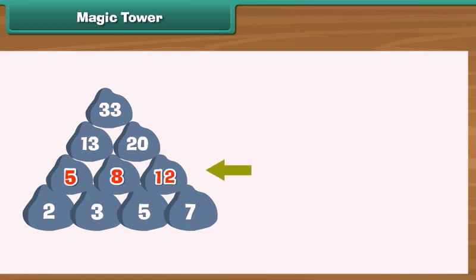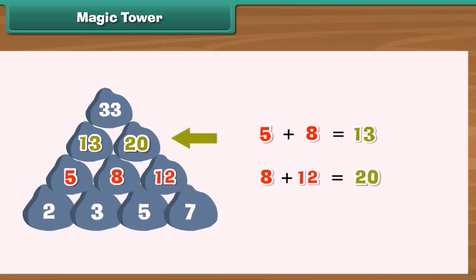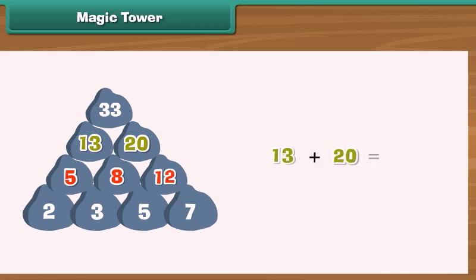Let us now take the stones of the second row. 5 plus 8 is equal to 13. 8 plus 12 equals 20. 13 and 20 form the row above. Let us now take the stones of the third row. 13 plus 20 is equal to 33. 33 forms the topmost row. So, the pattern is clear. Every stone starting from the second row is the sum of the two stones beneath it.